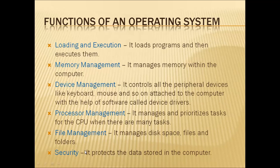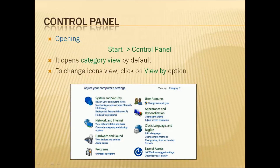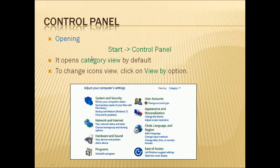Next, we are going to see about the control panel. The control panel is used to adjust your computer settings. If you want to make changes in your computer settings, you should go to the control panel. We can open it by clicking on Start and then selecting the control panel option. It opens in category view by default.